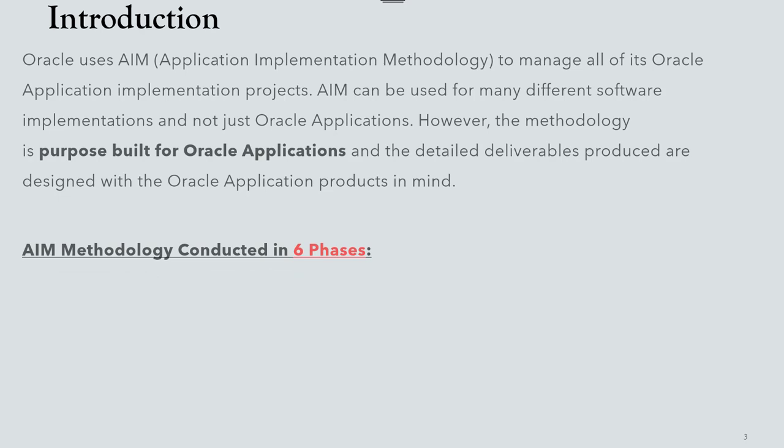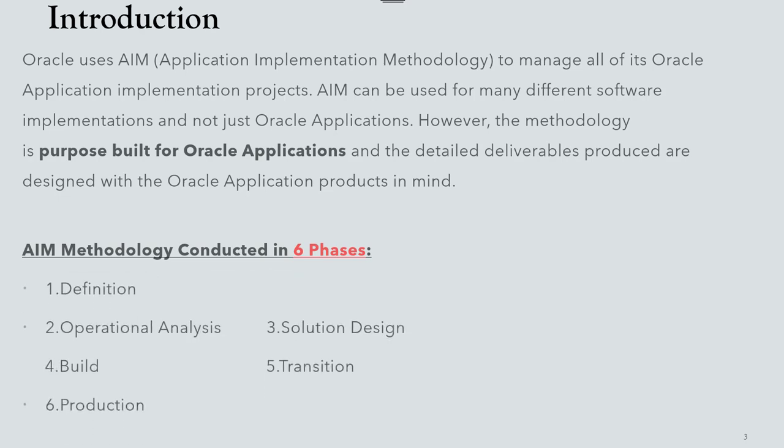AIM methodology is conducted in six phases: Definition, Operational Analysis, Solution Design, Build, Transition, and Production. Starting with the Definition phase: you plan the project, review the organization's business objectives, and evaluate the feasibility of meeting those objectives under time, resource, and budget constraints. The emphasis is on building an achievable work plan and introducing guidelines on how the organization will work to achieve common objectives.